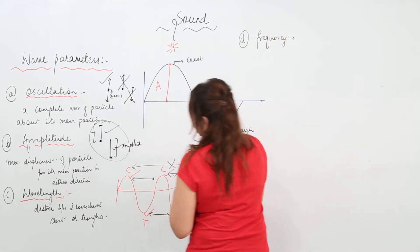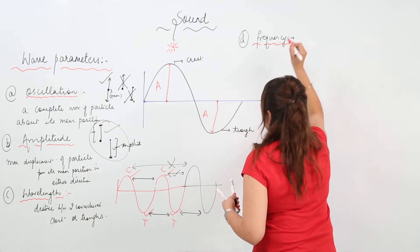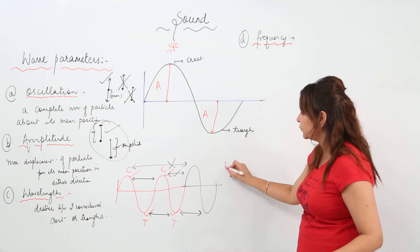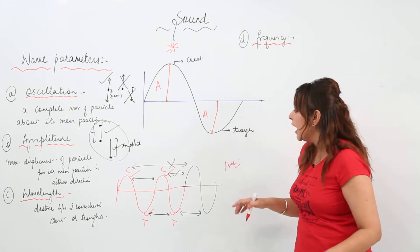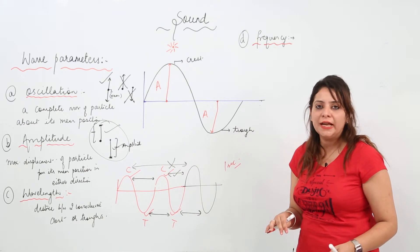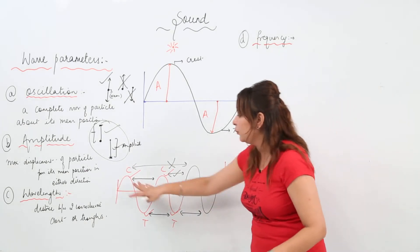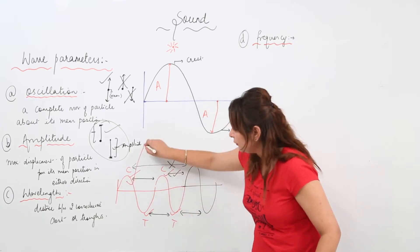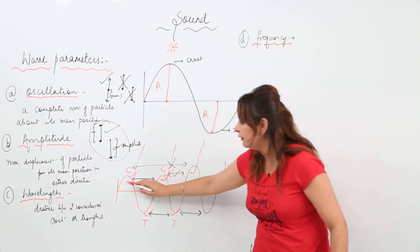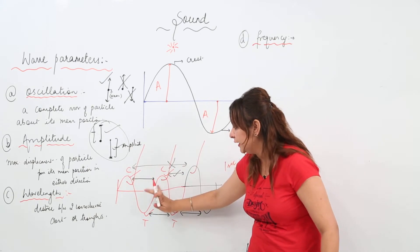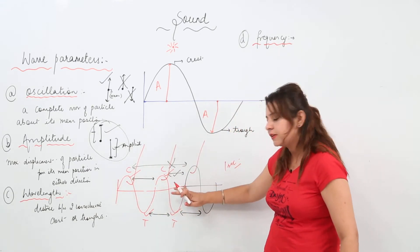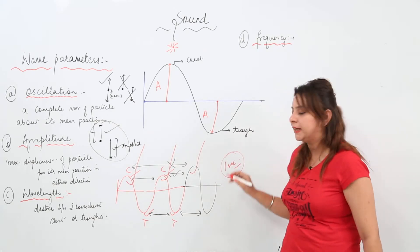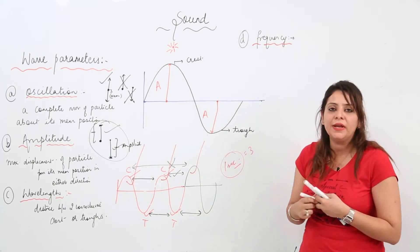The fourth parameter is frequency. Suppose I fix the time to one second and I see how many waves are produced in that second. Suppose I find a graph like this — it comprises one wave, another wave, another wave, another wave, because one wave consists of one crest and one trough. So till here is one wave, till here the second wave, till here the third wave. So the number of waves produced in one second is 3, and that is the frequency.